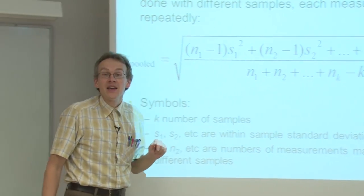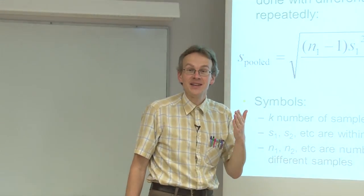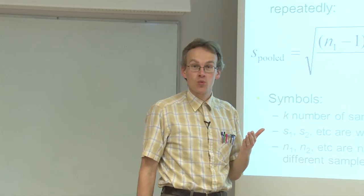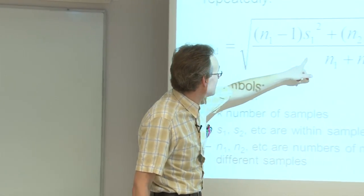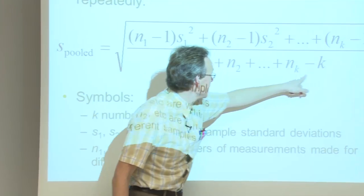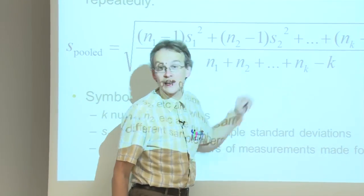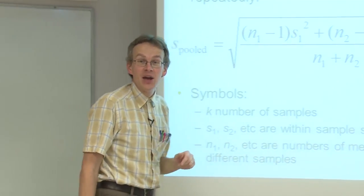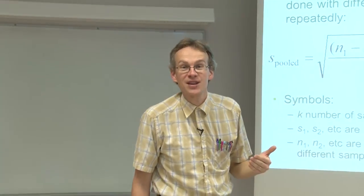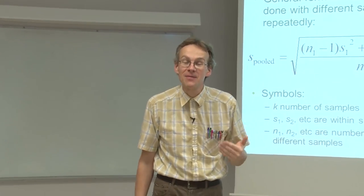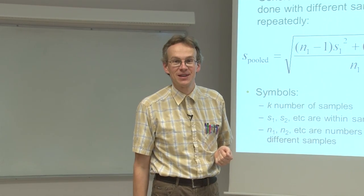So that if we have, let's say, ten samples, but make with each of them only two measurements, then this number of degrees of freedom will be ten times two minus ten, which is equal to ten. Meaning, it is roughly, statistically speaking, as good as making eleven parallel measurements with the same sample.